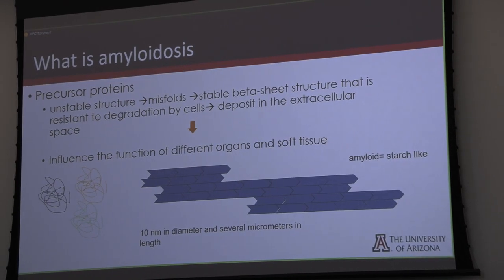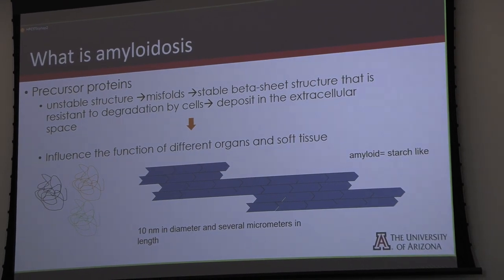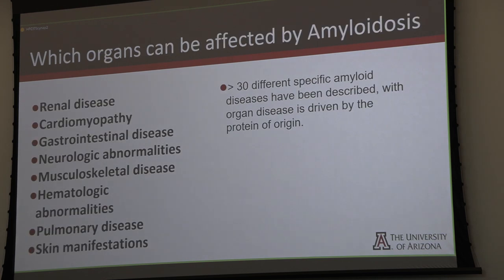We all know that amyloidosis is not coming from sugar, like the name might suggest. It is actually percussive proteins that create a very stable structure, and depending on when and where they are deposited, they will create a variety of diseases.